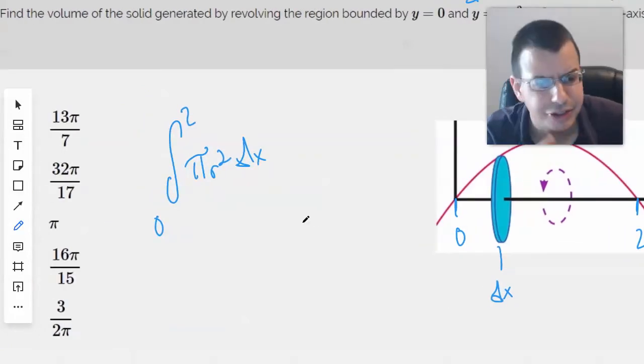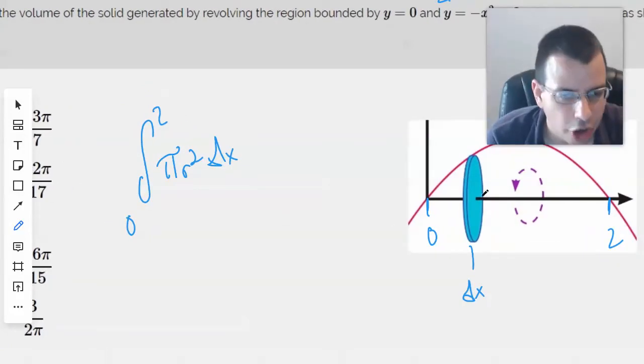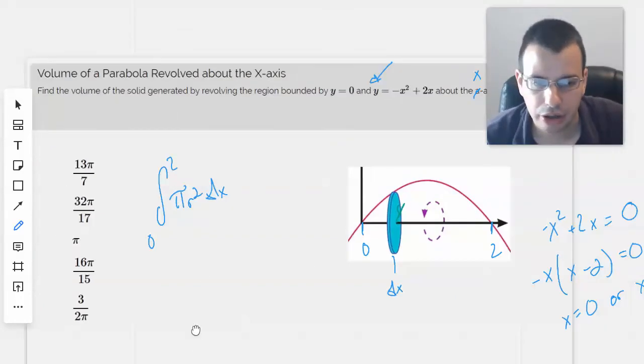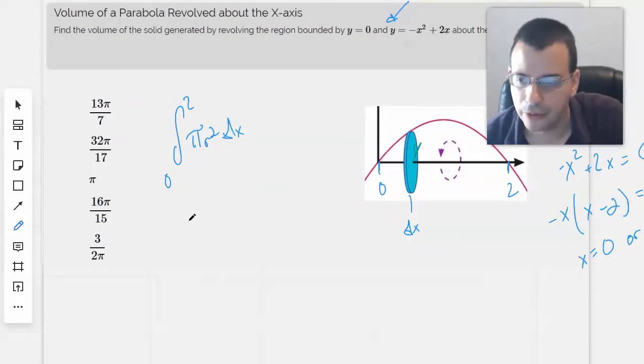And yes. So now the question is, our challenge is to find out what this r value is. So r will equal this equation right here, which will be negative x squared plus 2x.